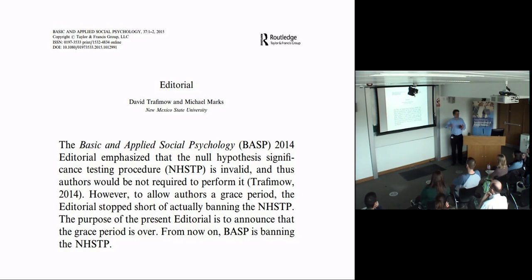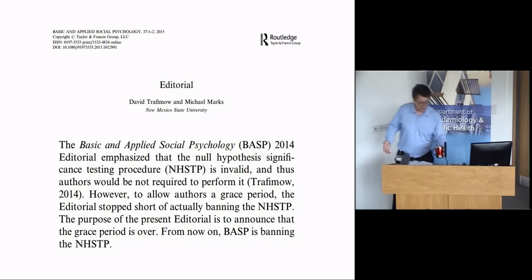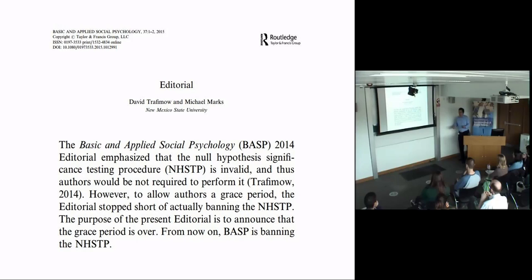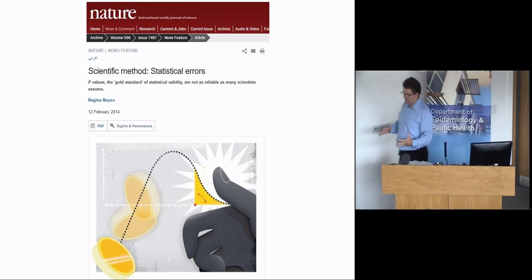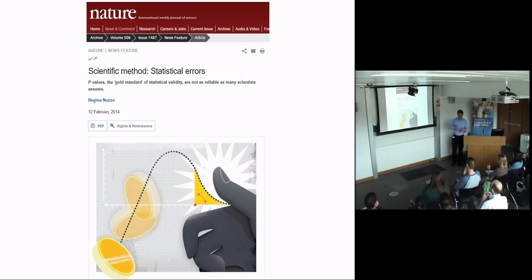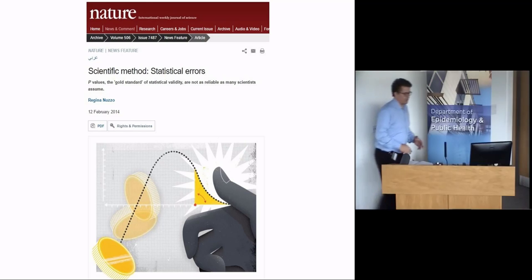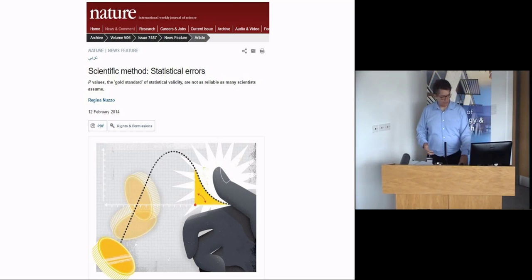Then the statistics world exploded with opinions, because this was a radical idea. A lot of people cheered. Leading up to that decision there were lots of editorials and blog posts re-highlighting all the problems inherent in p-values. Probably the most popular was a piece written for Nature News by Virginia Nichols, which is still the most viewed article on Nature News with hundreds of thousands of views, calling out the inherent problems with p-values.